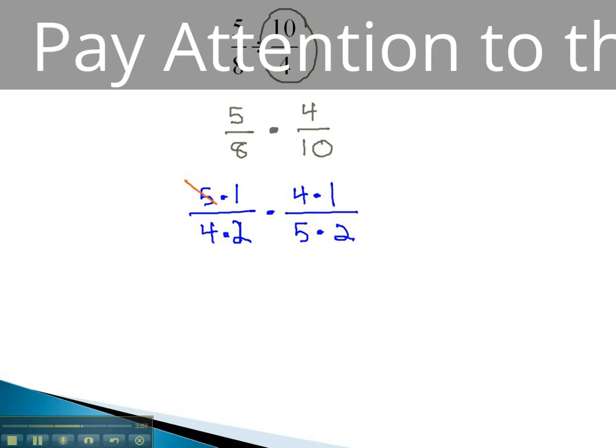We can now divide out the common factors of 5 and 4 that appear both in the numerator and the denominator. To get our final answer, we simply multiply across: 1 times 1 is 1. In the denominator, 2 times 2 is 4, and we have our solution.